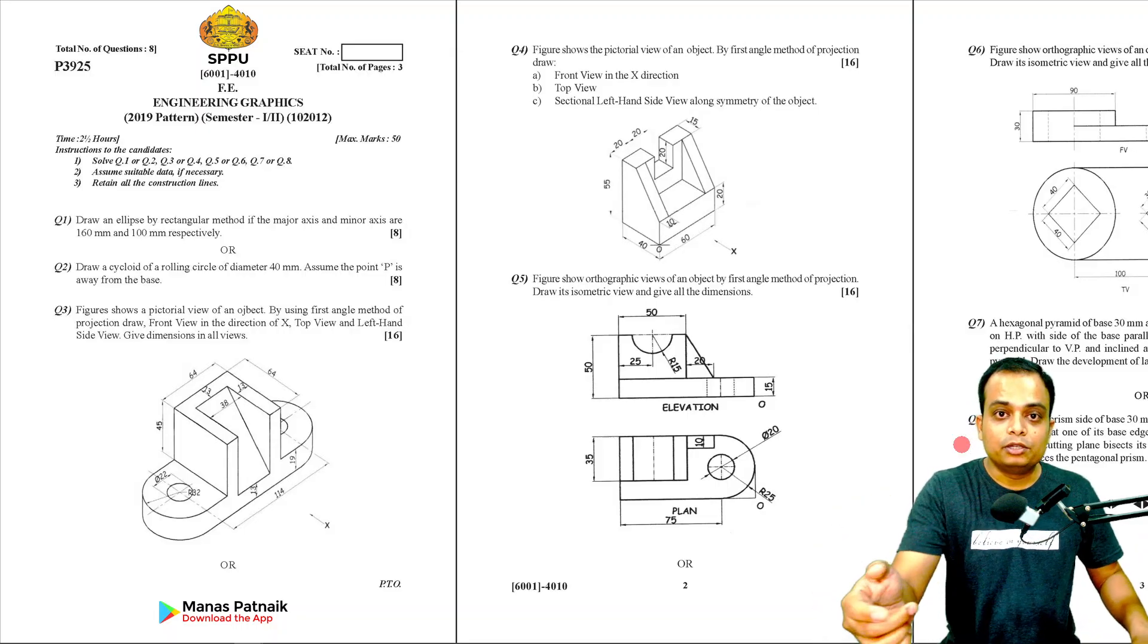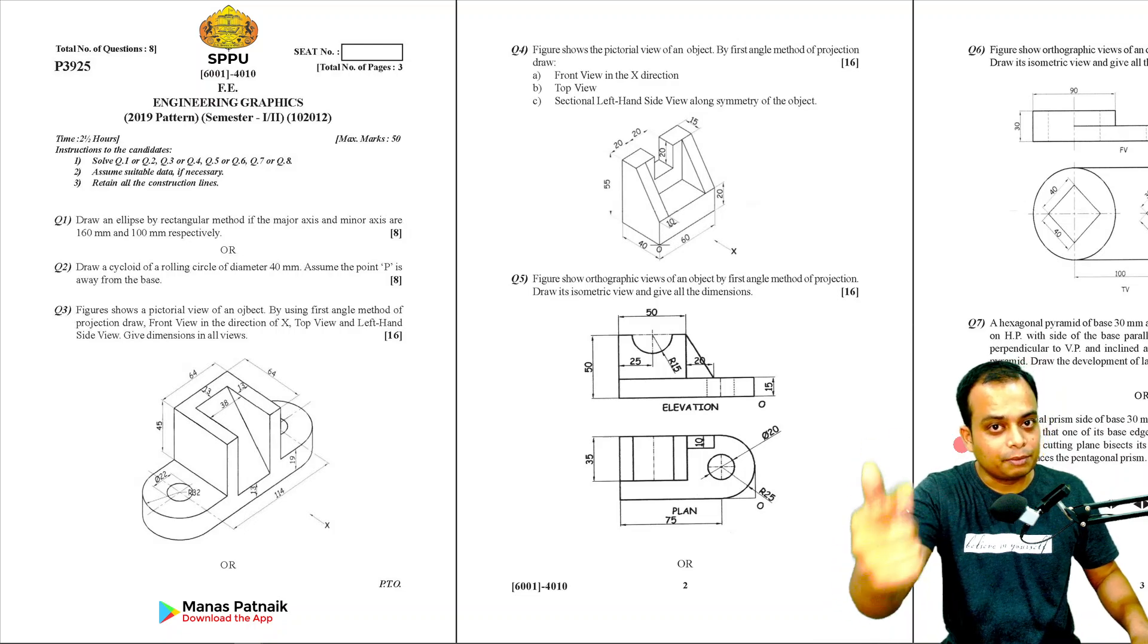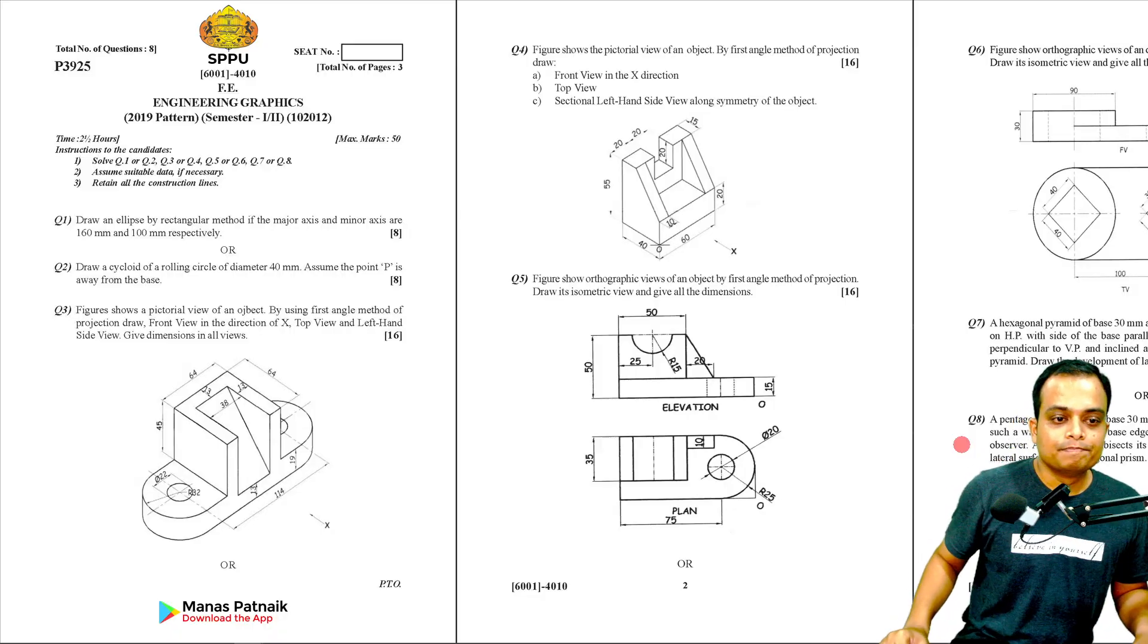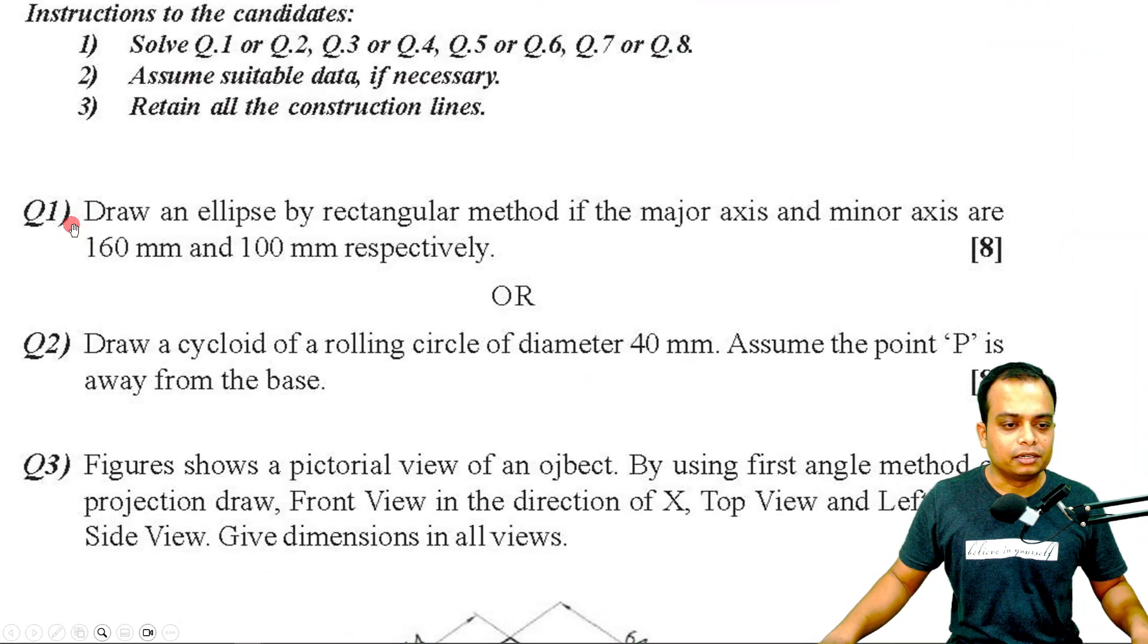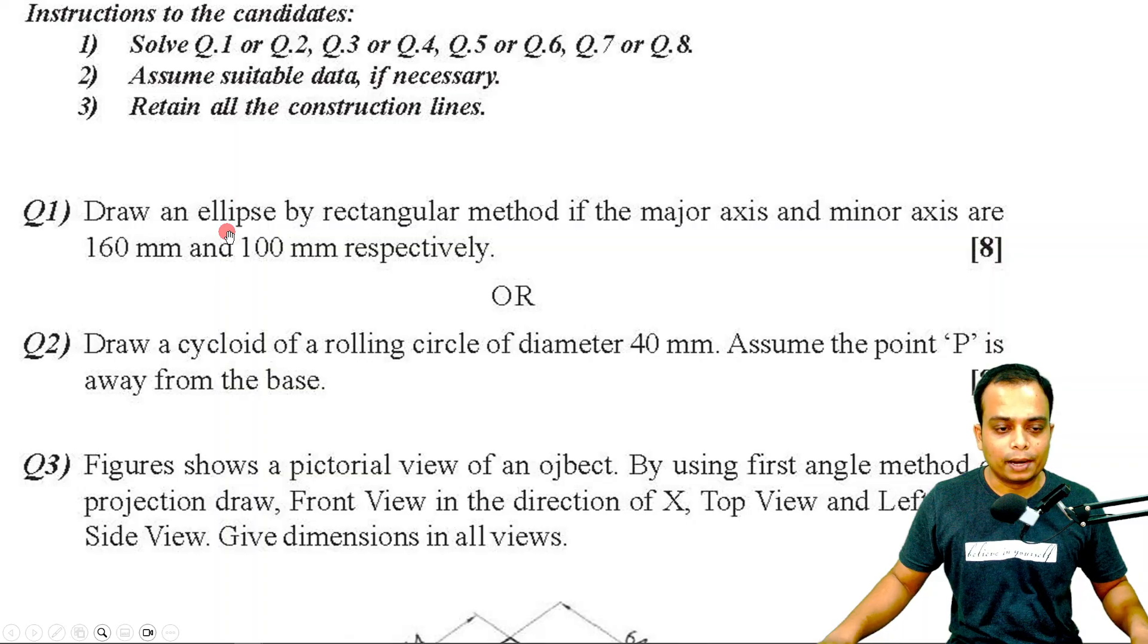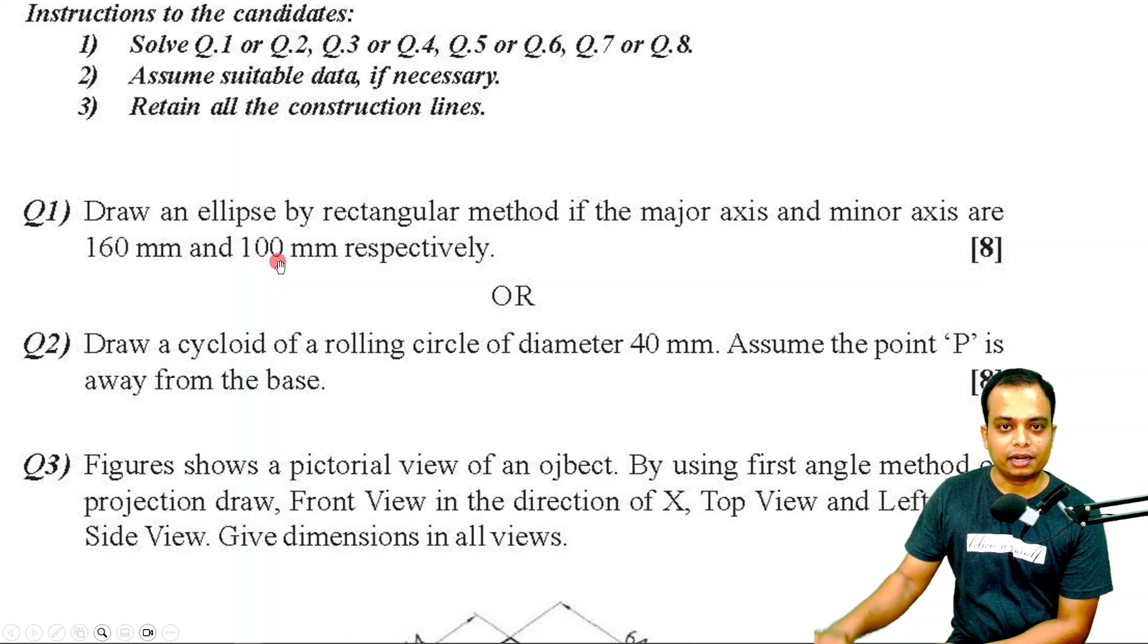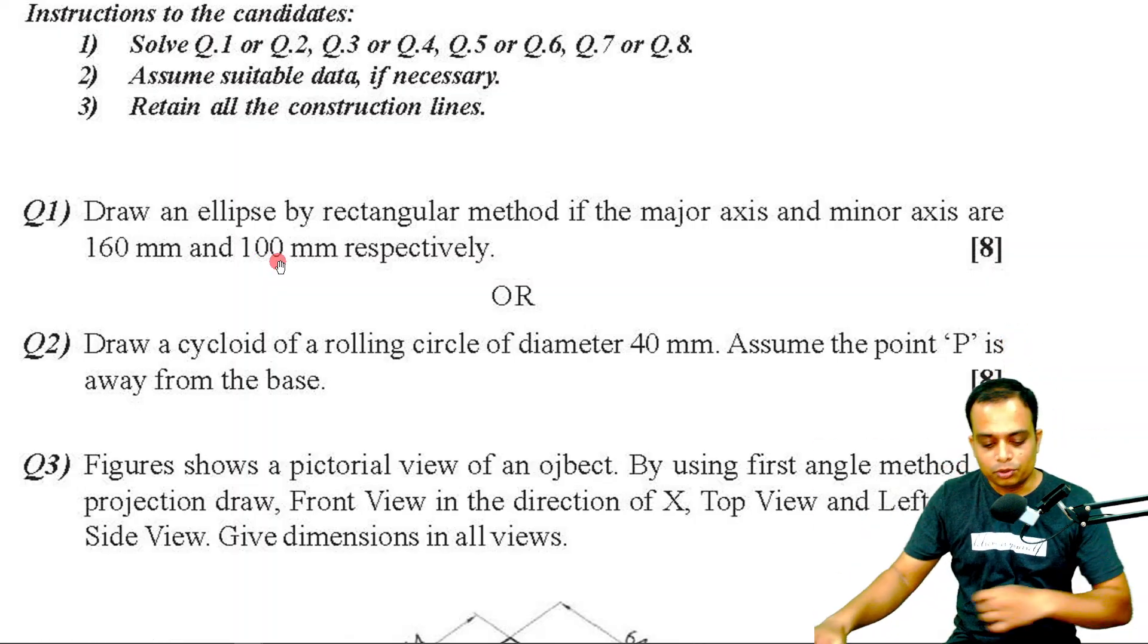This video is also available in Hindi on the B-Tech Plus channel. Link is in the description. Let me read the question: Draw an ellipse by rectangular method if the major and minor axes are 160 and 100.